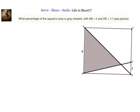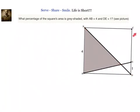Hello friends, welcome back. Let us look at this problem: what percentage of the square's area is gray shaded, with AB equal to 4 and DE equal to 1? We have to find the area of triangle OAB divided by the area of the square, then multiply by 100.